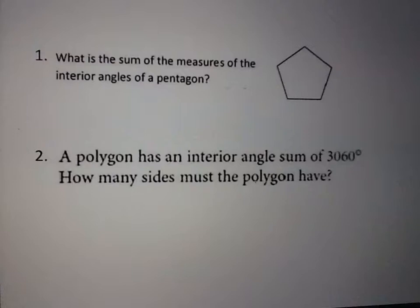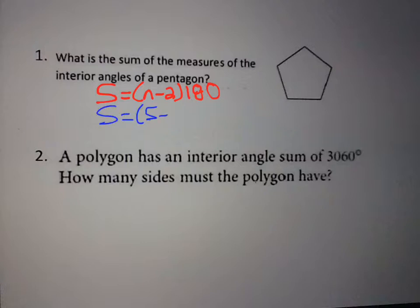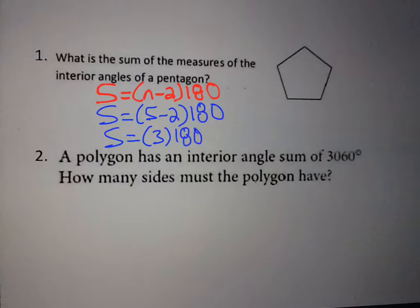What's the sum of the measures of the interior angles of a pentagon? A pentagon has five sides. We use the formula: sum equals (n minus 2) times 180. You need to have that memorized. So that's (5 minus 2) times 180, which is 3 times 180, which equals 540.